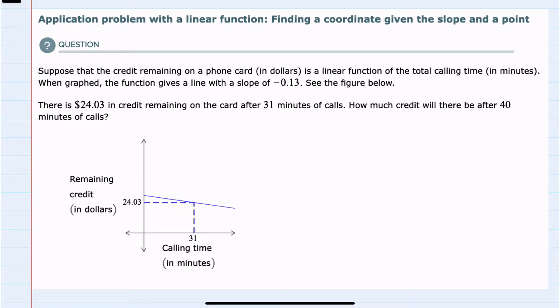The example that we have here is about a phone card and the balance on that card. As it was described in the title, we're given the slope and we are given a point.